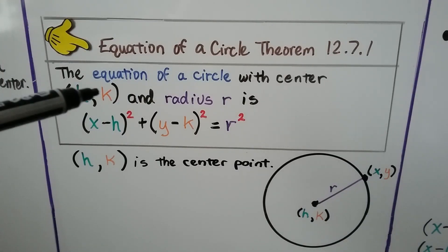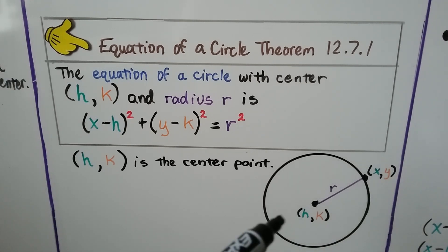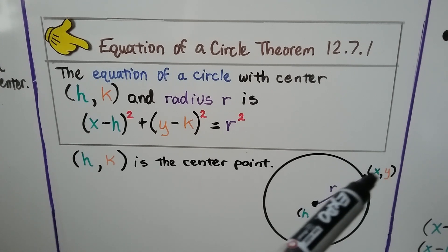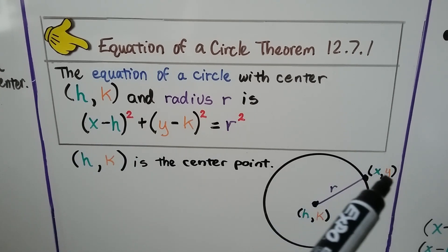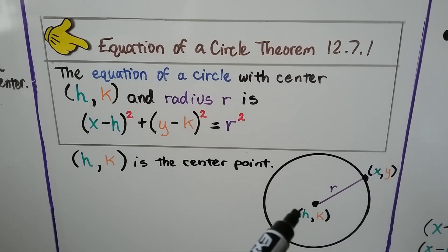So just remember that the h, k is the center of the circle. Then we have a radius, and in the distance formula, the x sub 2, y sub 2 are going to be represented as just an xy. And that's going to be the x sub 1, y sub 1 is the h, k.